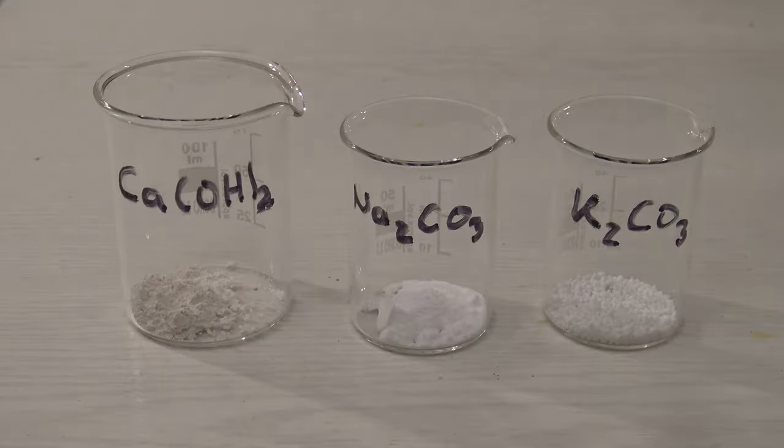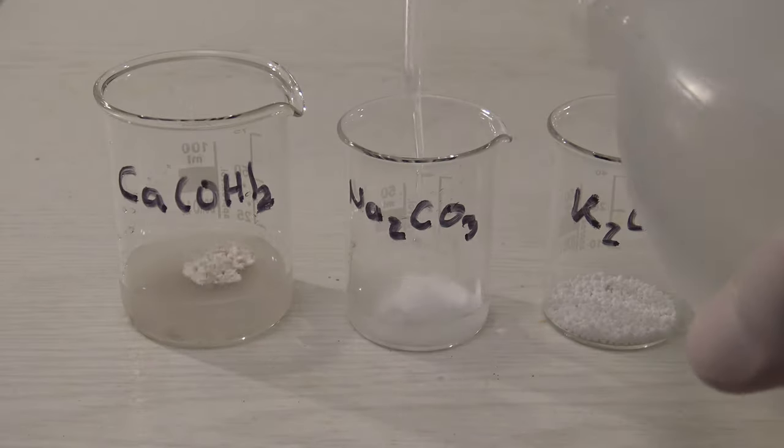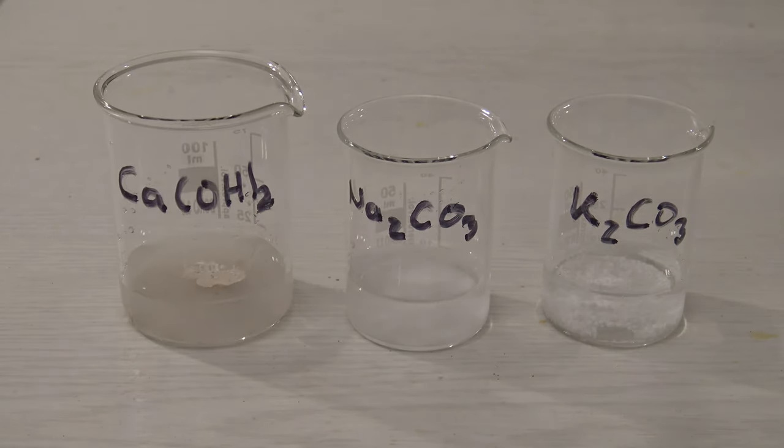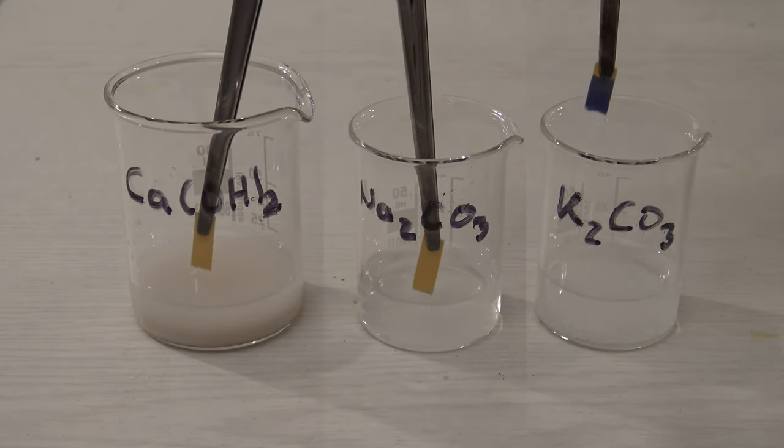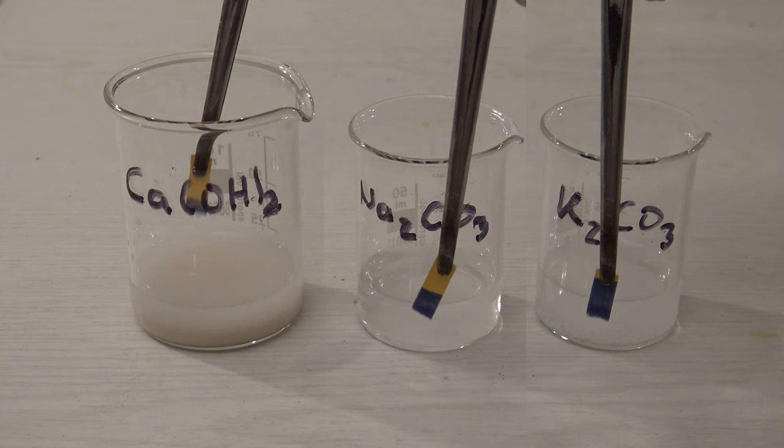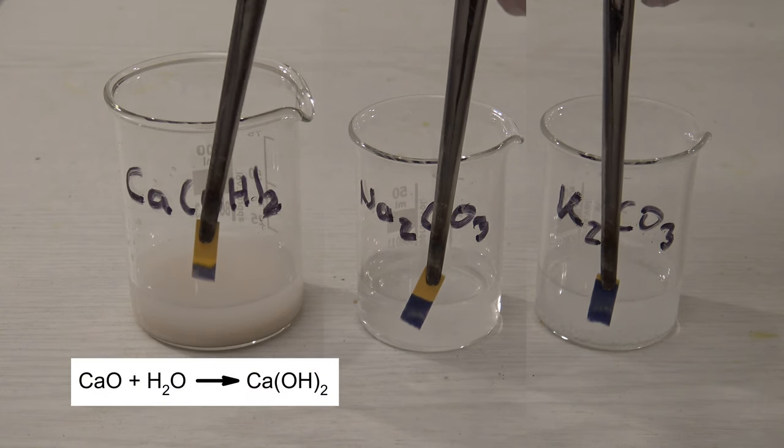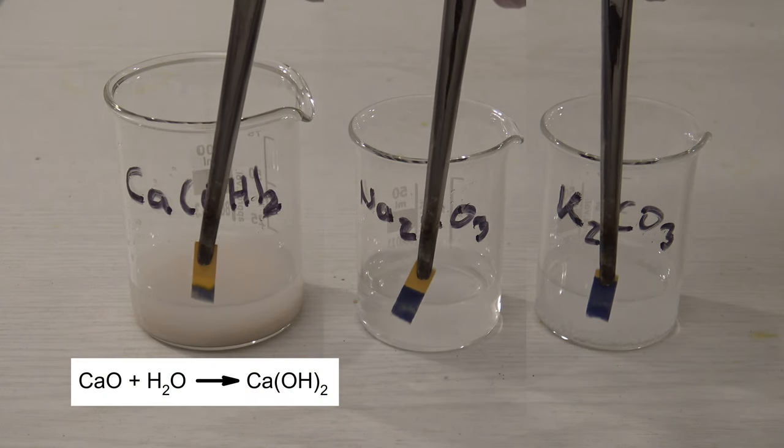The ash of plants consists mainly of the carbonates and oxides of calcium, sodium, and potassium. Except for the calcium carbonate, all of these cause the solution to become alkaline. The calcium oxide reacts with water to form calcium hydroxide at first.